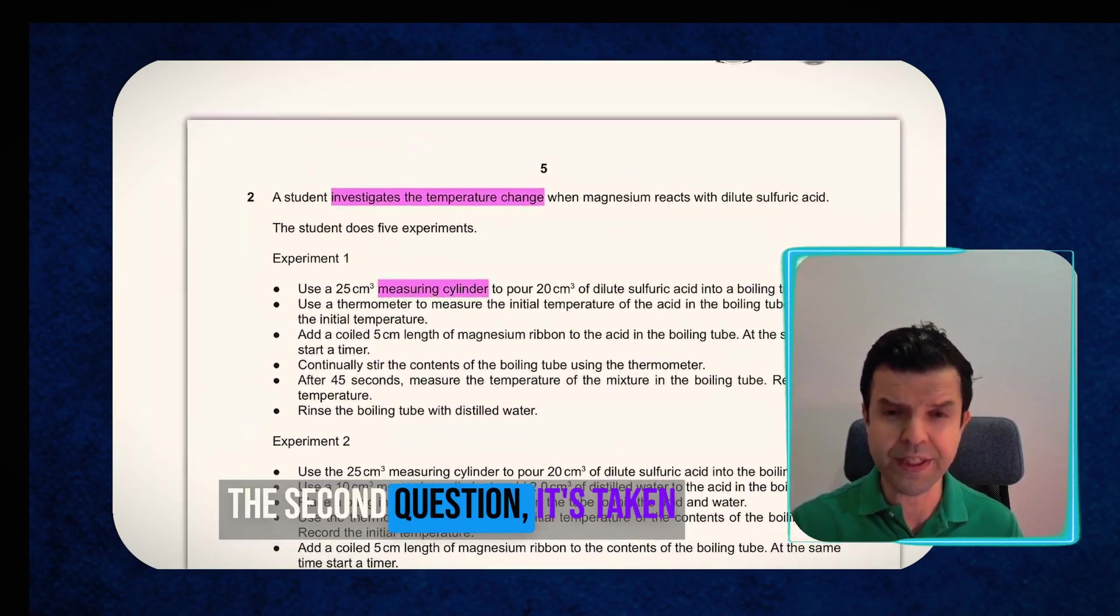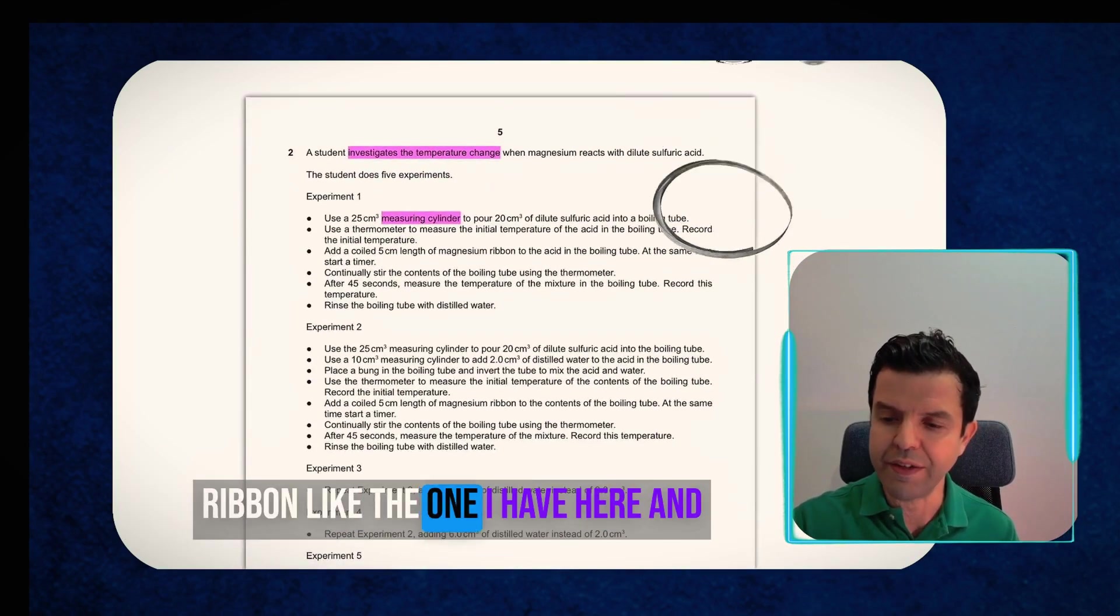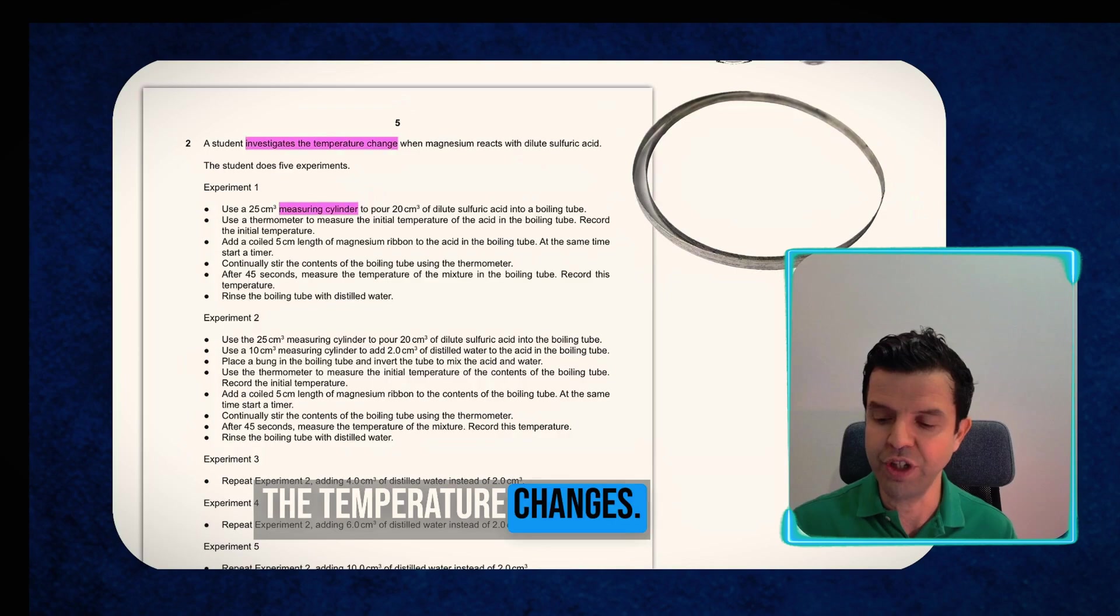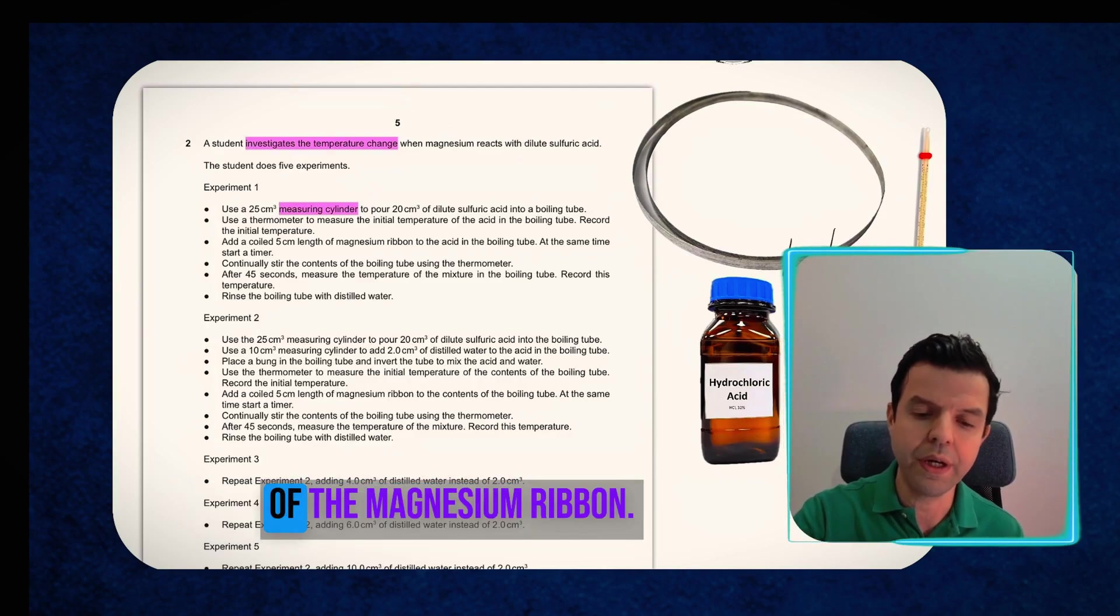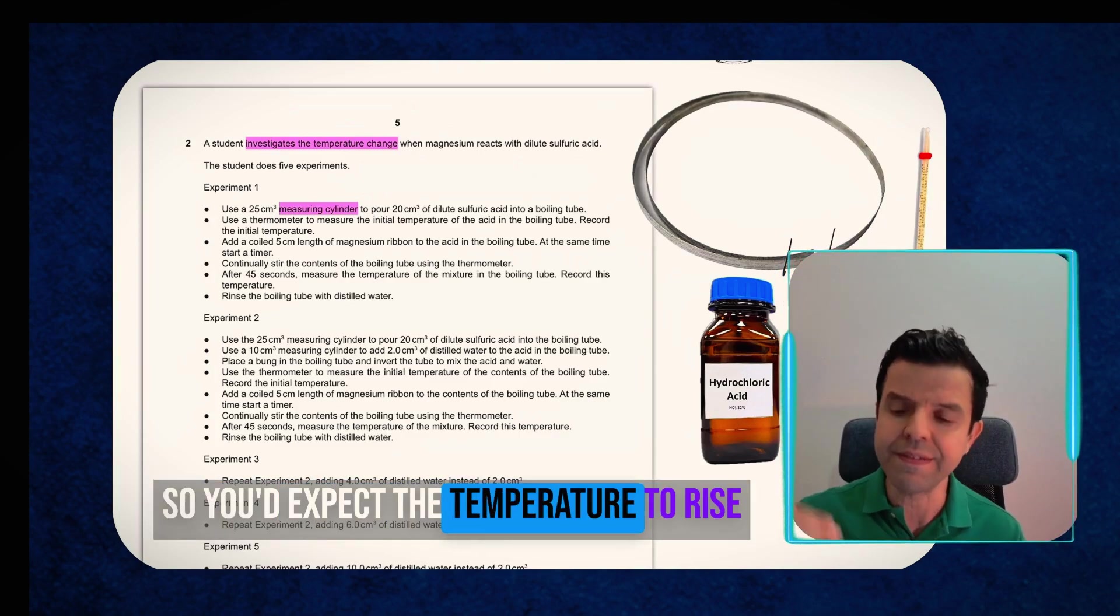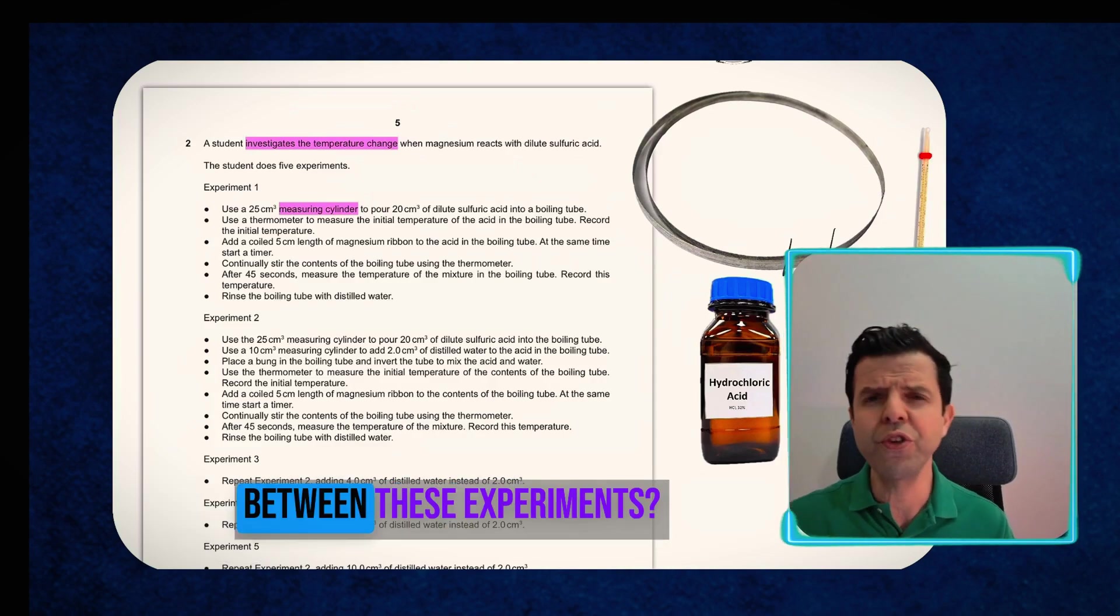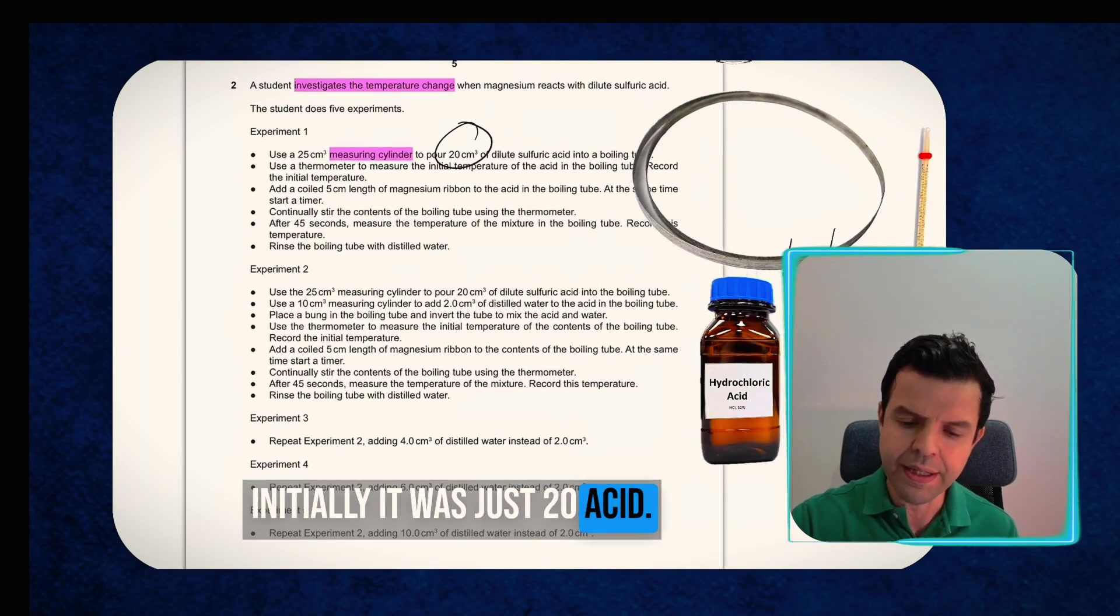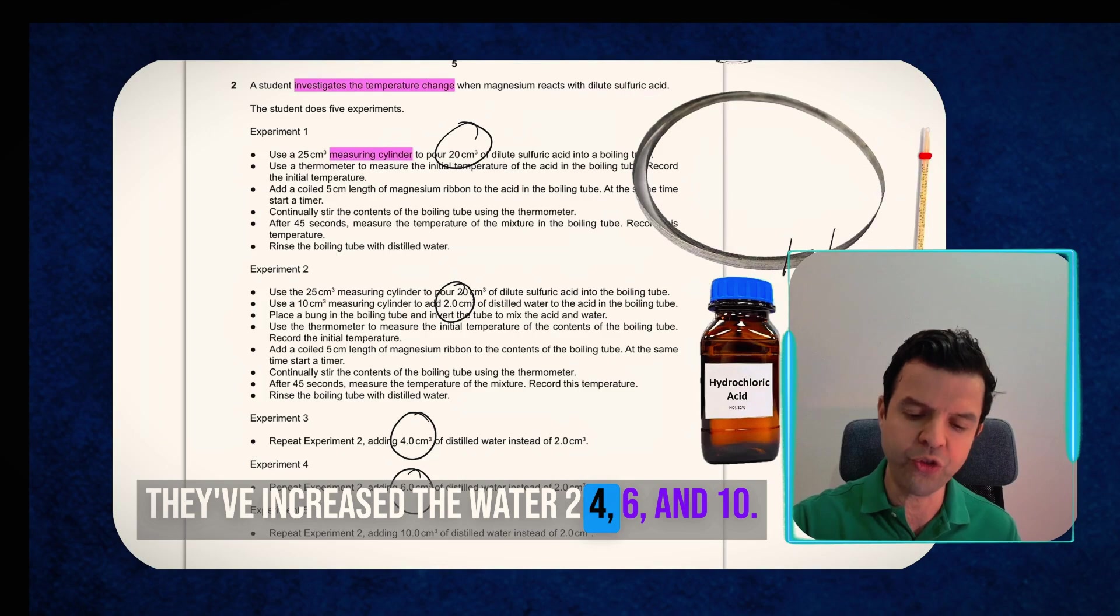Let's get to the second question. The second question is taken from the topic of energetics. So basically they're taking some magnesium ribbon, like the one I have here, and they're adding it to hydrochloric acid, and they're measuring the temperature changes. So you have a boiling tube like this one here. You have an acid, and you add measured centimeters of the magnesium ribbon, and we're checking the temperature change. This is an exothermic reaction, so you would expect the temperature to rise as you add the magnesium to the acid. They've done this experiment five times. What's the difference between these experiments? Simply, they're adding water each time. Initially it was just 20 acid. Then they took 20 acid and they added water. They've increased the water to 4, 6, and 10.